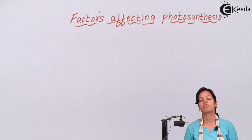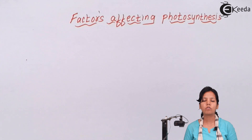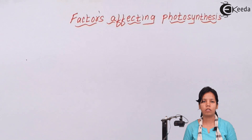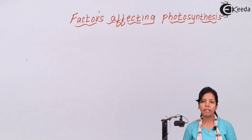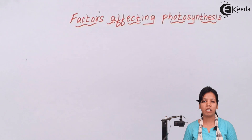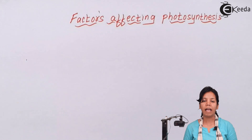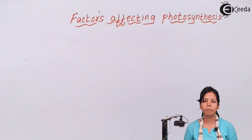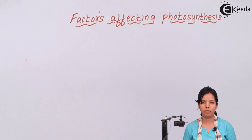The last factor is oxygen. Oxygen is a by-product during the process of photosynthesis, but in certain processes of photosynthesis even oxygen is required. If there is an increased amount of oxygen present during photosynthesis, it is called the Warburg effect, and this increased amount of oxygen can hamper the electron acceptors.